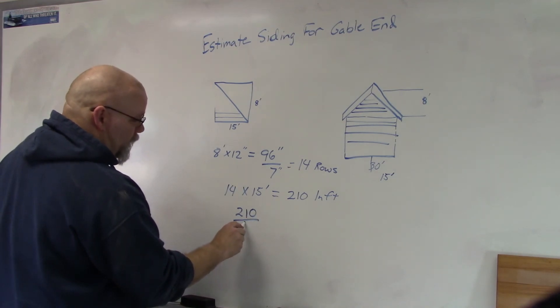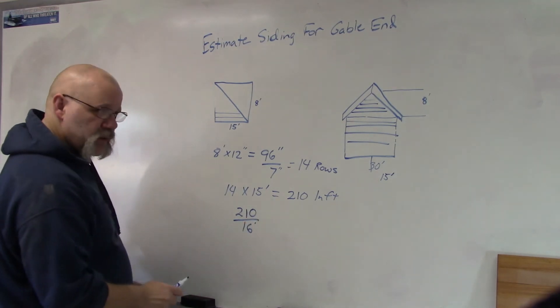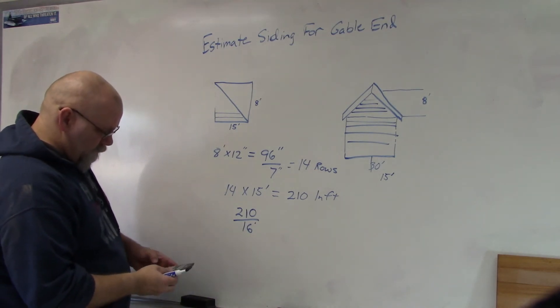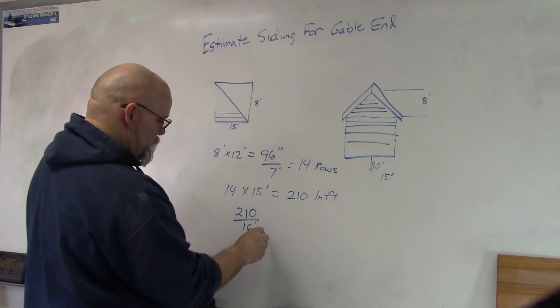Now then I'm going to take 210, and if I buy it like SmartSide that comes in 16-foot pieces, I'm going to take 210 divided by 16, and I would get 13.1 sheets or pieces.